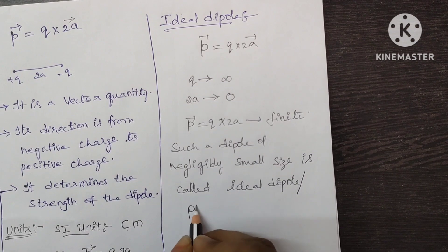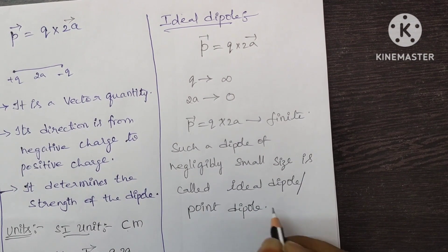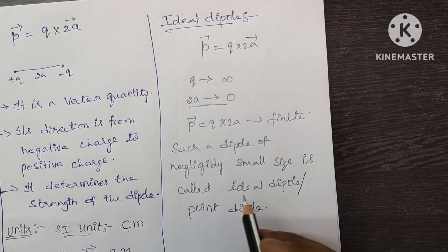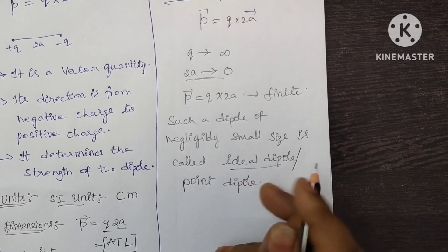Other name for this is point dipole. Here its length is becoming zero, so it is a very negligibly small size. So it is called as a point dipole or ideal dipole.